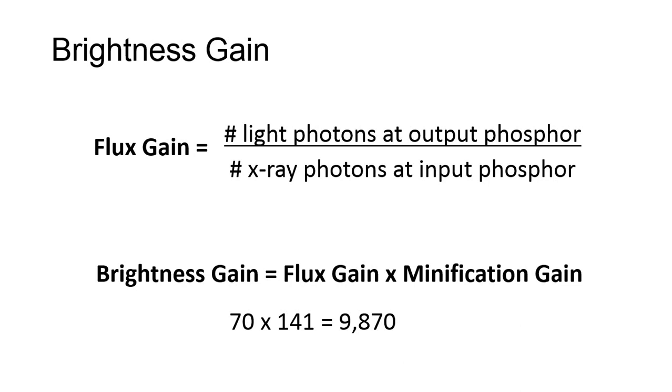To find brightness gain, you would multiply the flux gain, which was 70, by the minification gain in the previous example of 141. The result is that the total brightness, or brightness gain, is 9,870, meaning that the light at the output is 9,870 times brighter than the original brightness at the input phosphor.